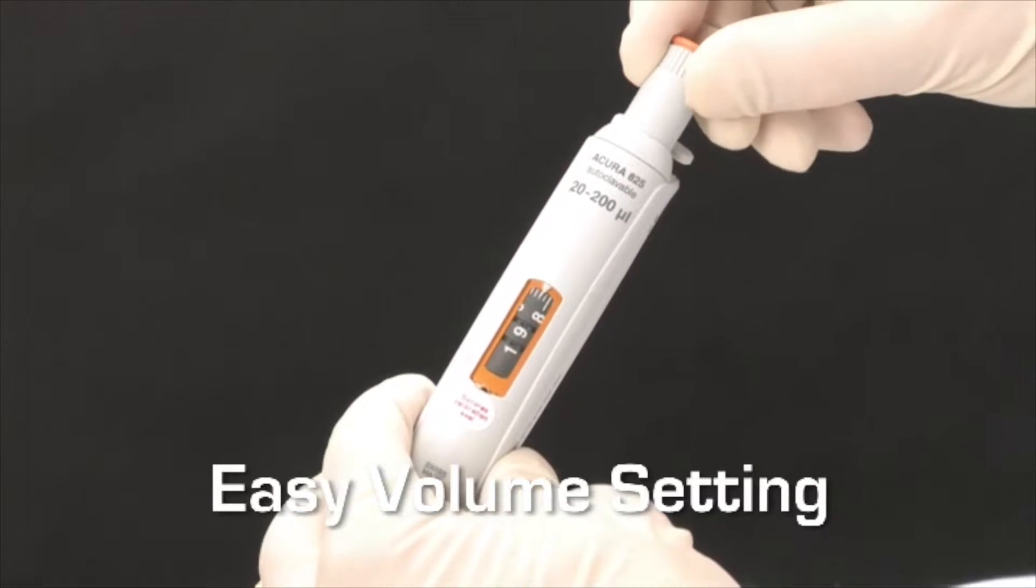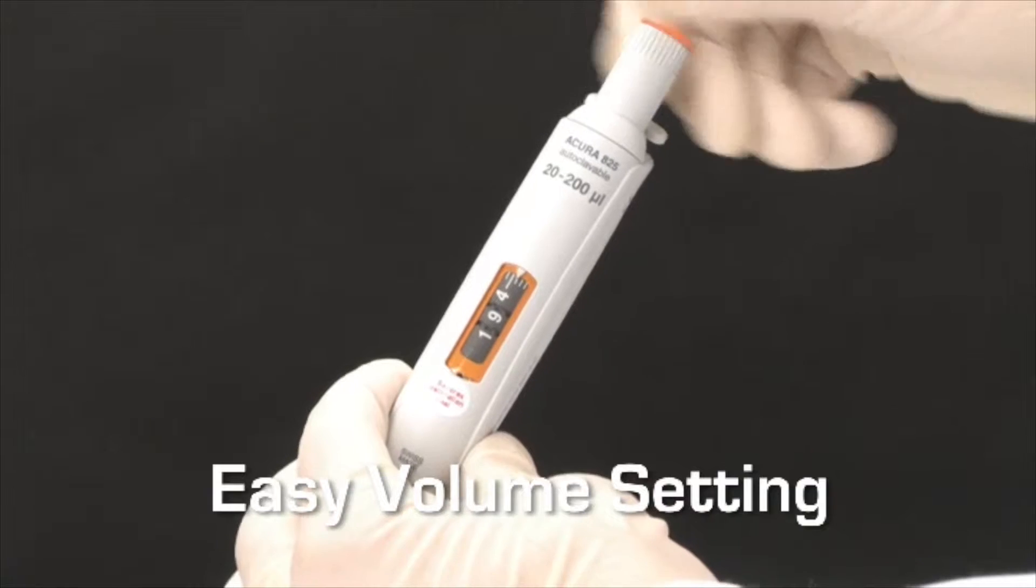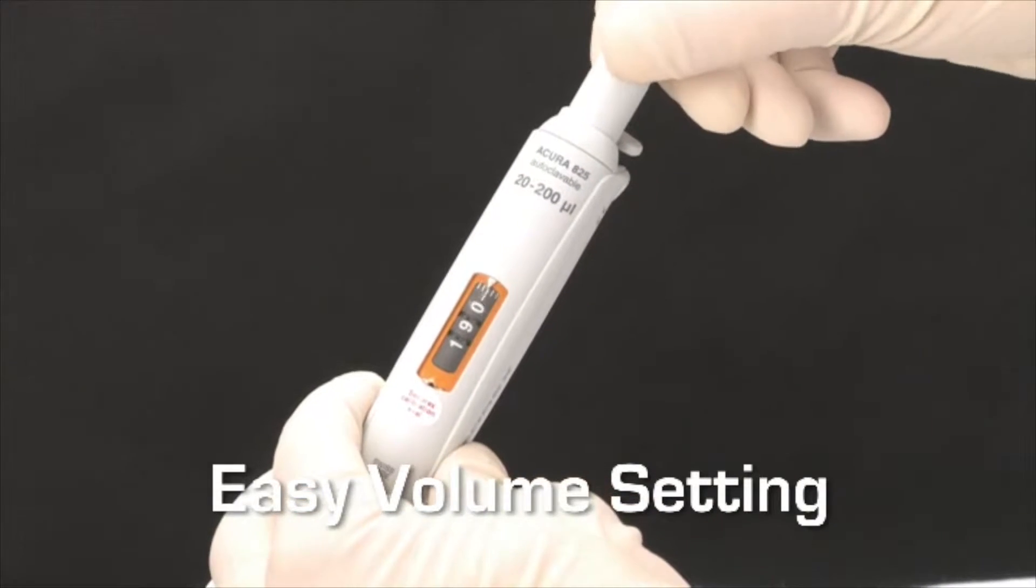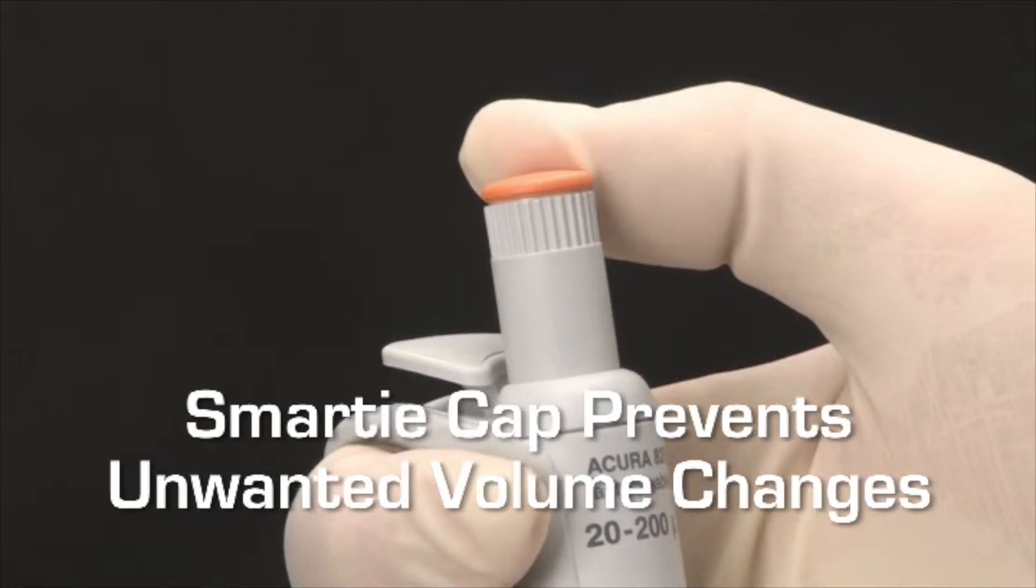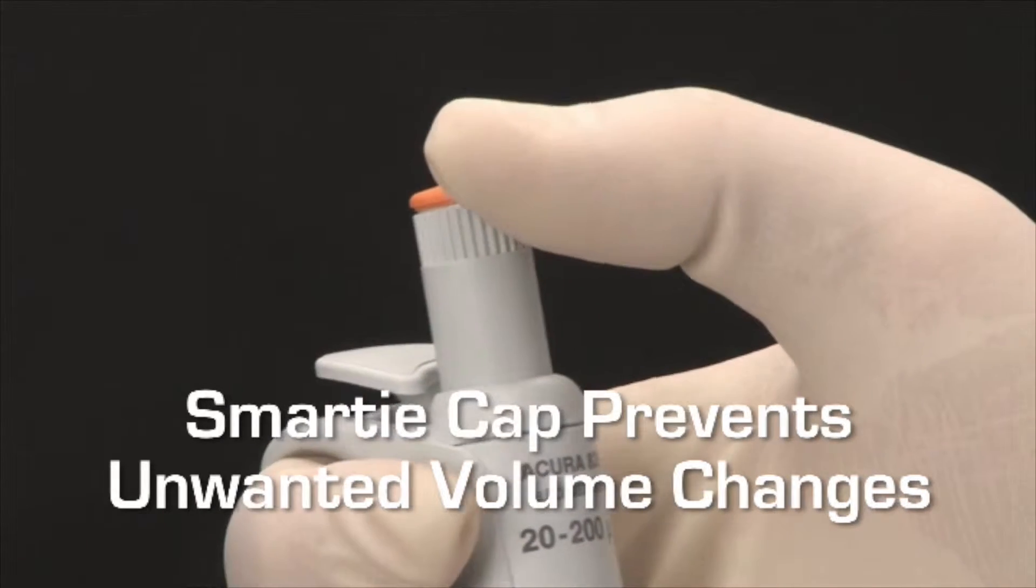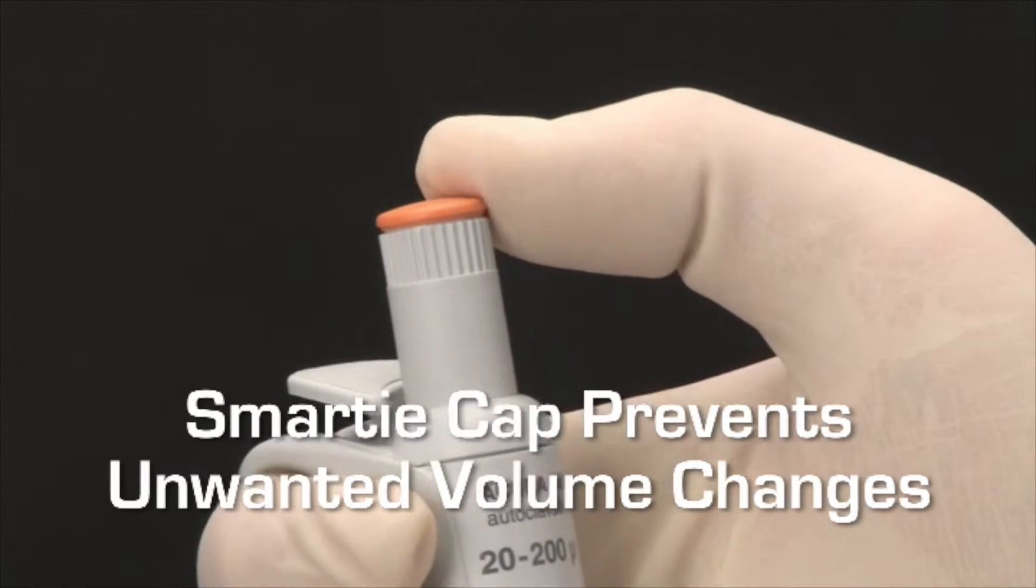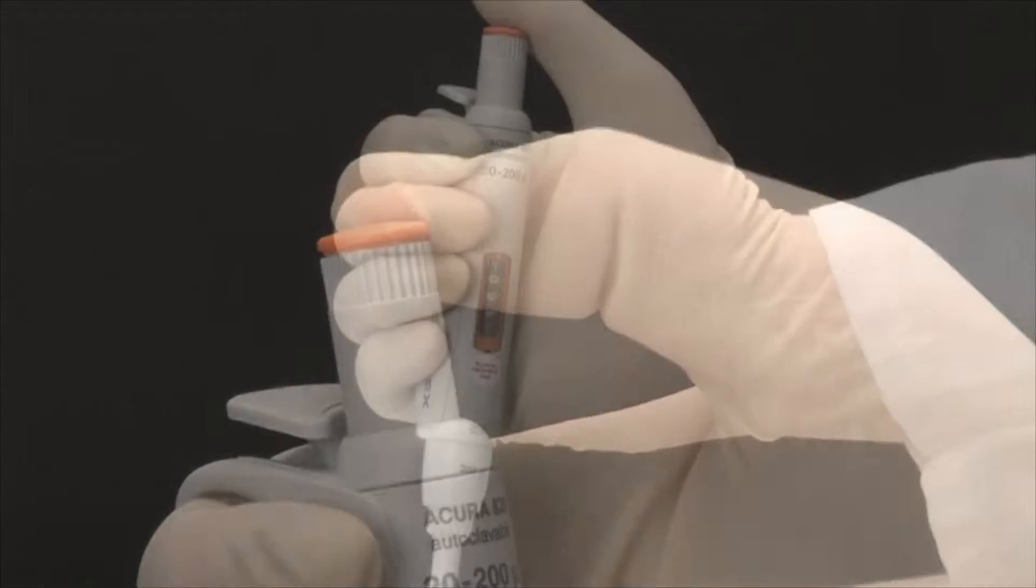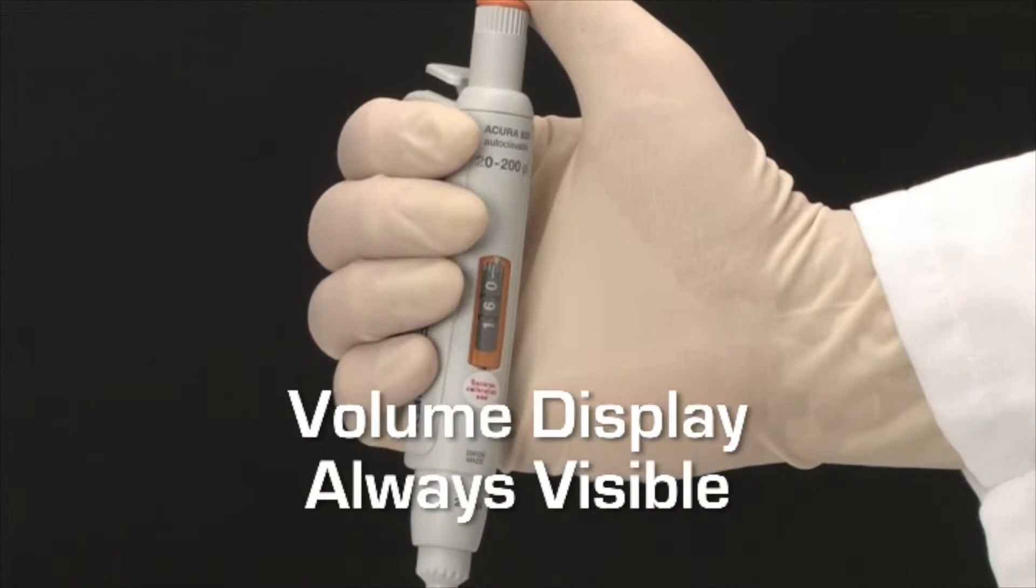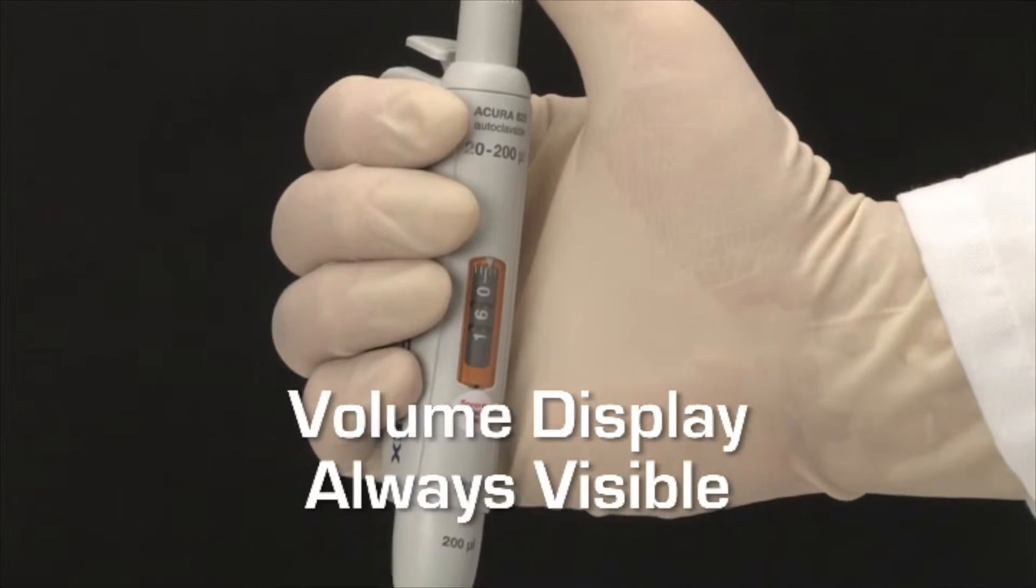Setting the exact volume to be dispensed with all Acura manual pipettes is simple and precise. Once selected, the free-rotating color-coded cap prevents any unwanted volume changes from occurring during use. For positive verification, the contrasted volume display is visible anytime.